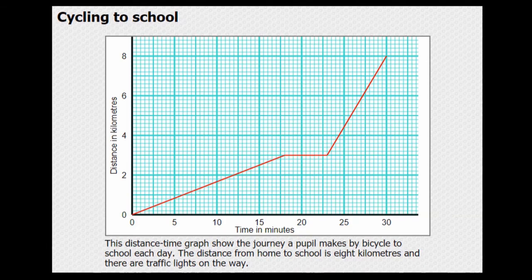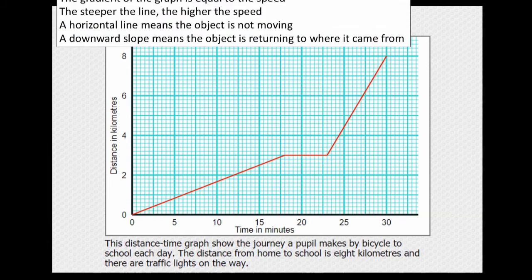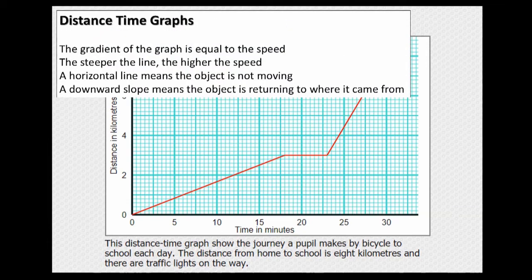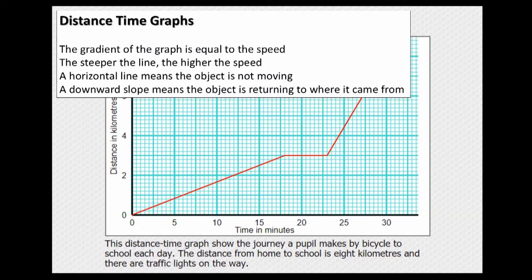So, the key features of distance time graphs is that the slope represents the speed. The steeper the slope, the faster the speed. The horizontal line means that no progress is being made. The body is standing still. And a downward slope means the object is returning to where it came from.